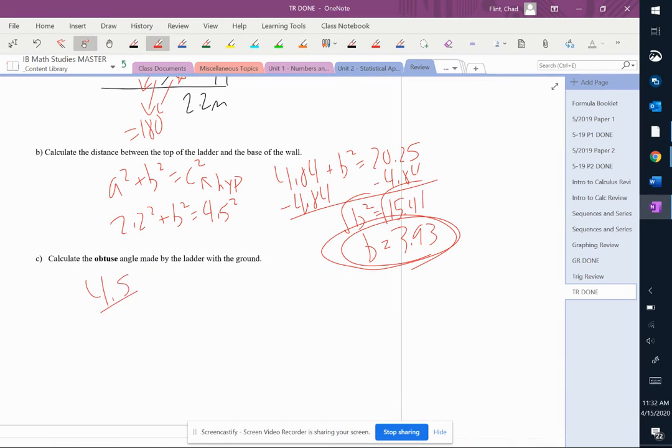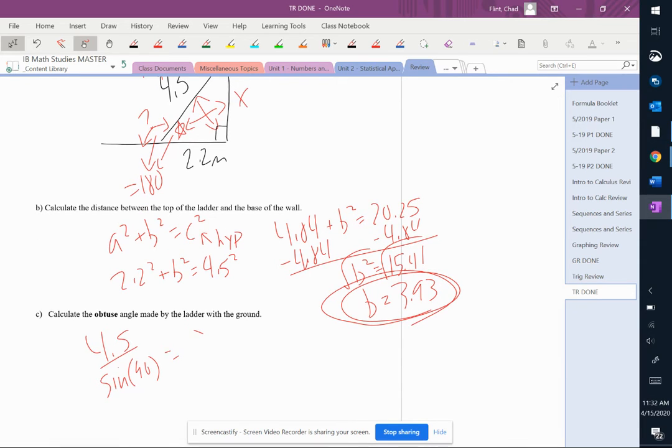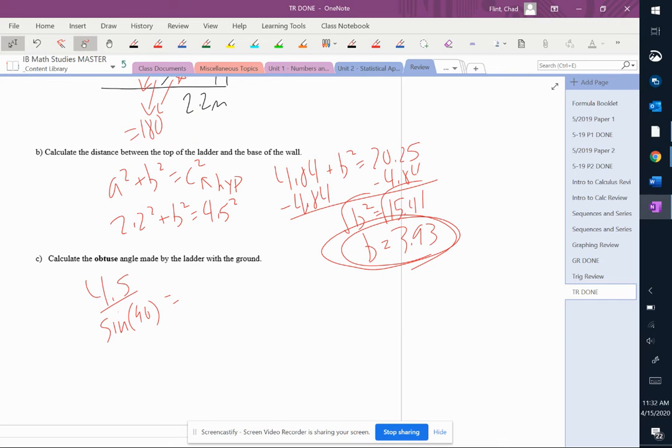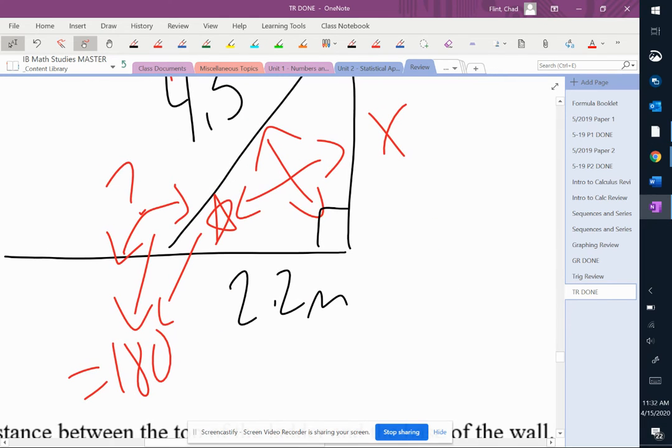So 4.5 over sine of 90 equals... we'll call it y. We know the side. I didn't set that up right? Oh yes I did. 4.5 over sine of 90, and that is 3.93, equals 3.93 over sine of y. So we'll call that y instead of a star. Let me put a y in there.